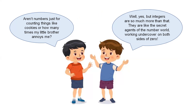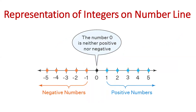Let's see what Aryan and Ji are talking about. Aryan says, 'Aren't numbers just for counting things, like cookies and how many times my little brother annoys me?' Ji answered quickly, 'Well yes, but integers are so much more than that — they are like secret agents of the number world, working undercover on both sides of zero.' Here you can see zero in the middle, with positive and negative numbers on either side.